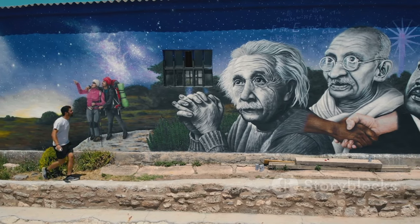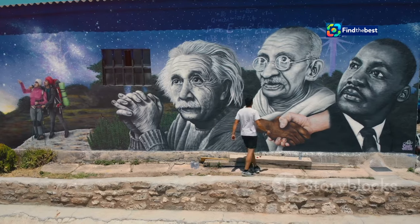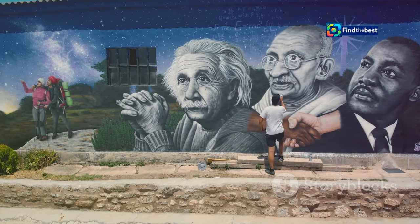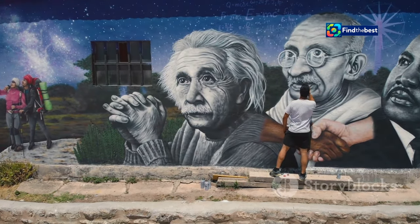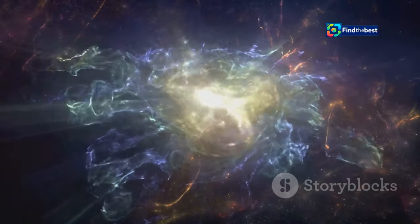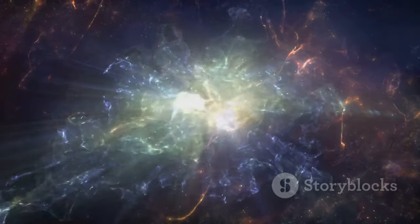The idea of a universe governed by chance seemed to him not only implausible, but also at odds with the beauty and elegance he saw in the laws of physics. To Einstein, the universe was a masterpiece of logical structure and aesthetic beauty.